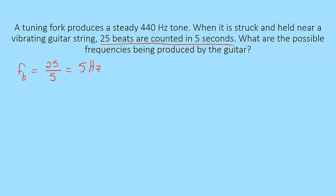We actually want to know, not the beat frequency, but what could the guitar be playing at that point in time. Keeping in mind that beat frequency is the difference between your two tones, you either have the 440 hertz from the tuning fork adding 5 or you have the 440 hertz from the tuning fork subtracting 5. So it's either 445 hertz or it's 435 hertz that are being produced by the guitar.